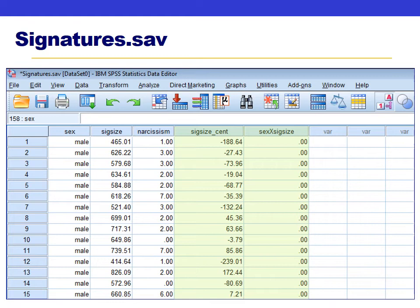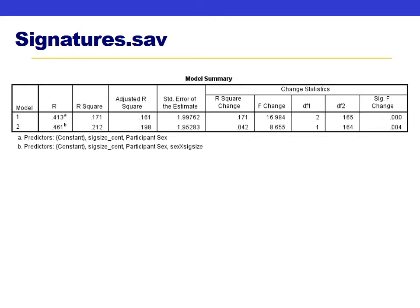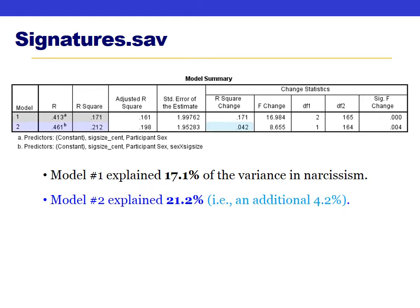Before running the regression, go to Statistics and ask for R-squared change statistics. Model one, which included only sex and signature size, explained 17% of the variance in narcissism. Model two, which added the interaction, explained about 21% of the variance. The R-squared change statistic shows that adding the interaction term explained an additional 4% of the variance in narcissism.